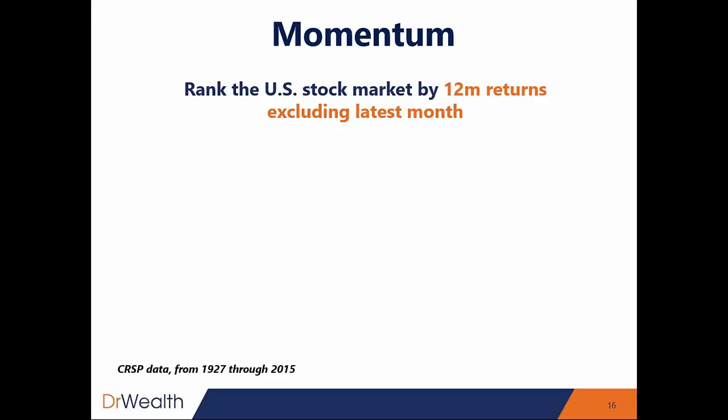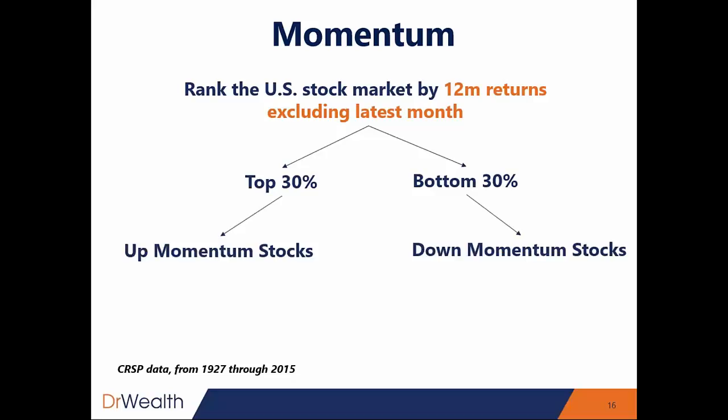So basically it's very price-based. They want to buy stocks that went up and short the stocks when they go down. The top 30% by their 12-month returns will be the up-momentum stocks, and the bottom 30% will be the down-momentum stocks.